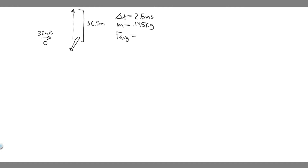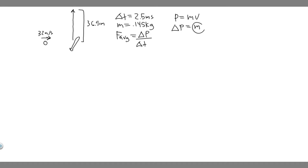So we want to find the average force in the x and the average force in the y. First off, you need to know that F average equals the change in momentum over the change in time. Change in momentum is just mass times velocity, and since mass is constant, it's just m times (v_final minus v_initial).